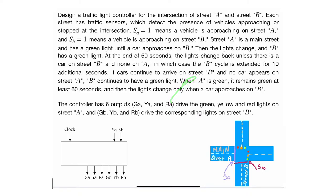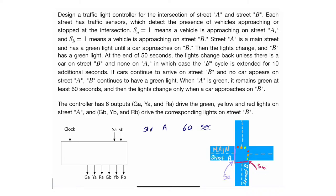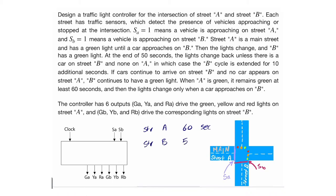Street A is the main street, so by default it should always stay green if there are no cars. Whenever street A is turned on, it should last for at least 60 seconds. It stays on unless a car appears on street B — when sensor B is active high (SB = 1), you wait briefly, then turn street A yellow, then red, and turn street B green.